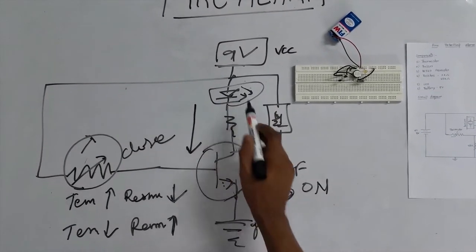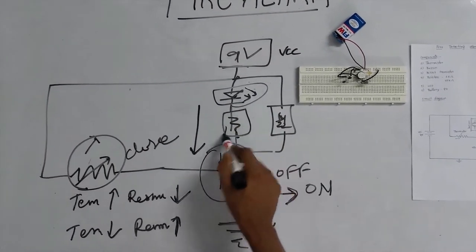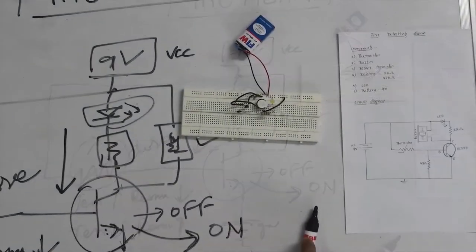Then the LED will glow. By the drop of this resistor, the buzzer will ring. Let us see how it works.